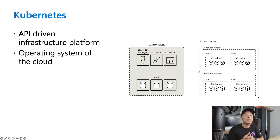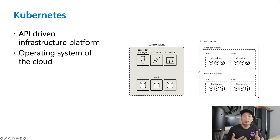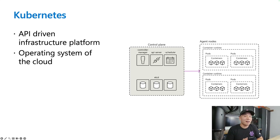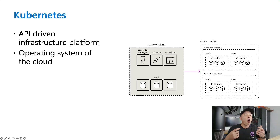Fun fact: Kubernetes actually turns 10 this year. At a very high level, Kubernetes architecture comprises a control plane and worker nodes. When you typically deploy your own Kubernetes cluster, you are in charge of configuring the control plane, all of its components, and bootstrapping each worker node to join the cluster. It's a lot of work.